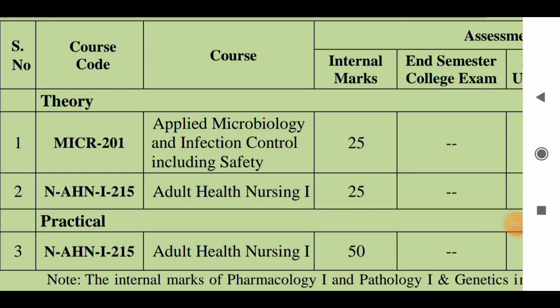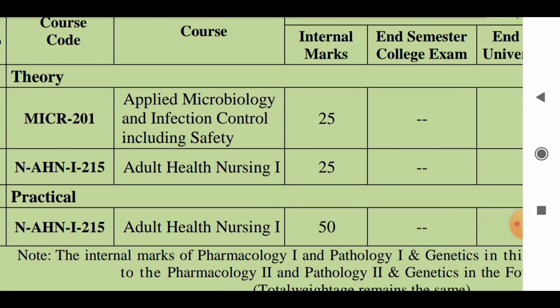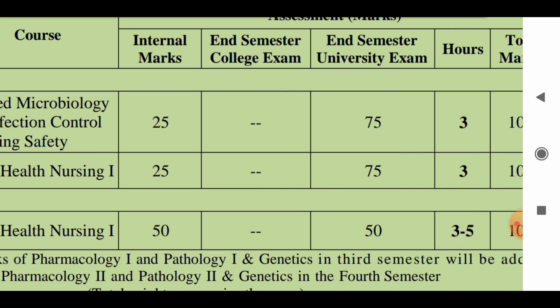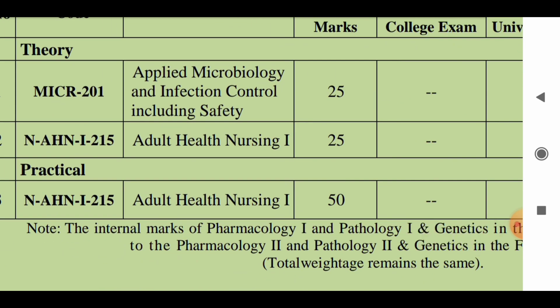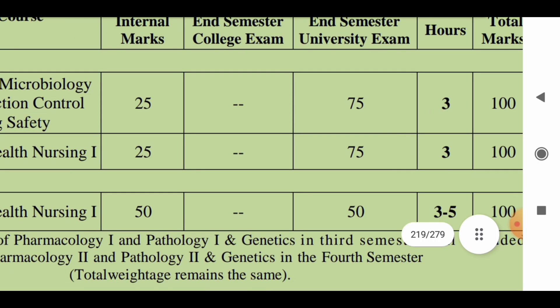Regarding the examination pattern: for Applied Microbiology and Infection Control including Safety, both will be conducted as a single paper. Internal marks will be for 25 marks, and the university examination will be a 3-hour paper for 75 marks, covering both subjects together. The second paper will be on Adult Health Nursing. Internal marks — from periodic tests conducted by teachers — will be out of 25 marks, and the end-semester examination will be a 3-hour paper for 75 marks. Adult Health Nursing practical will also be assessed: 50 marks internal and 50 marks external.